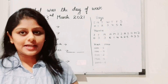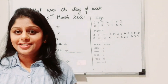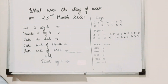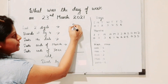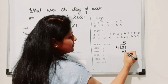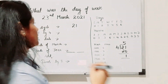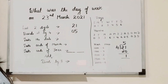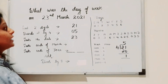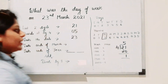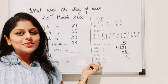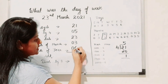To verify the method works, let's use today's date — 23rd March 2021. Step 1: last two digits of the year are 21. Divide 21 by 4; quotient is 5, write 5. The date is 23, so write 23. March's code is 3, so write 3. 2021 is in the 2000 series, so the century code is 6.